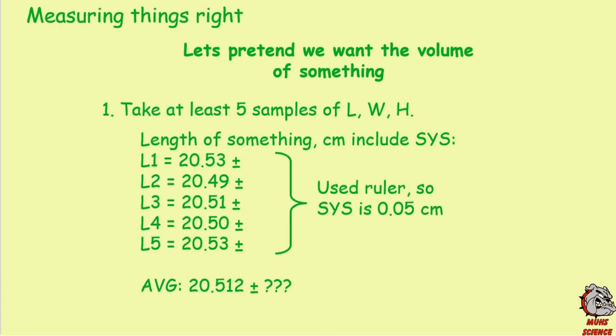Let's say we have a volume to measure, so we need length, width, and height of a rectangular solid. For this example I'll just take length. I'm going to take five measurements of the length of a brick — L1 through L5. Since I'm doing the measuring, I have to report the systematic uncertainty to you the reader.